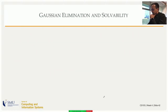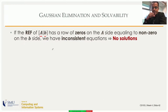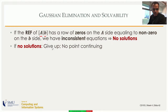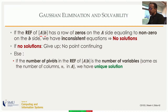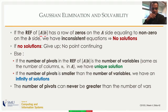Once we have the REF we can assess solvability. If the REF of the augmented matrix has a row of zeros on the coefficient (A) side equaling a non-zero on the constant (b) side, that is inconsistency — no solutions, stop. If there is no such row, solutions exist. Then check the number of pivots (the rank): if rank equals the number of variables you have a unique solution; if rank is less than the number of variables you have infinitely many solutions. The number of pivots can never exceed the number of variables.